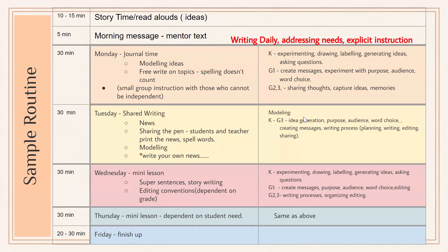On Tuesday we're looking at shared writing, which involves modeling and addresses curriculum outcomes in K to grade three. Wednesday is a mini lesson with explicit instruction on how to write great sentences, story writing, or editing. Thursday might be another mini lesson that builds on Wednesday, giving time for students to continue and build on what they've learned the day before.